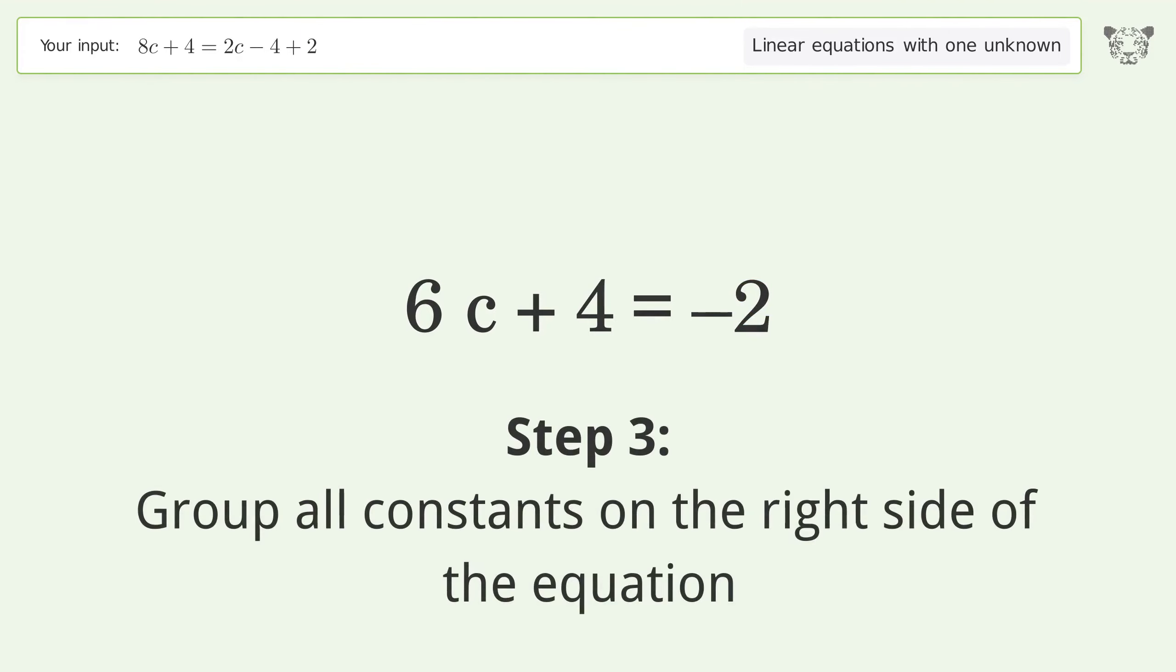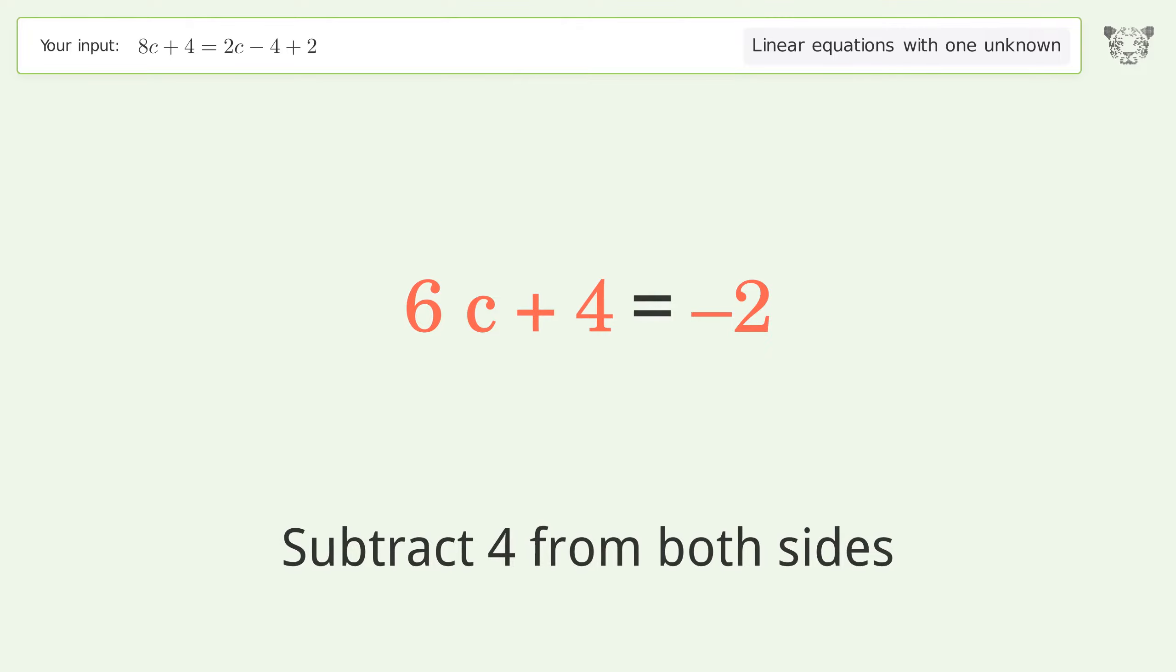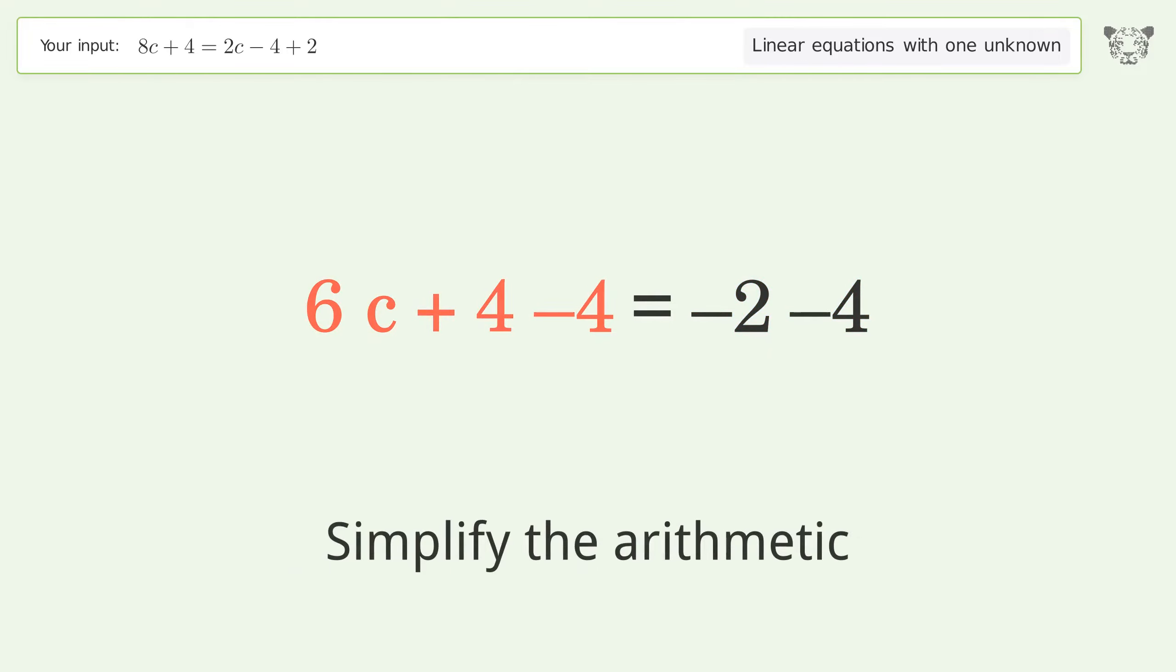Group all constants on the right side of the equation by subtracting 4 from both sides. Simplify the arithmetic.